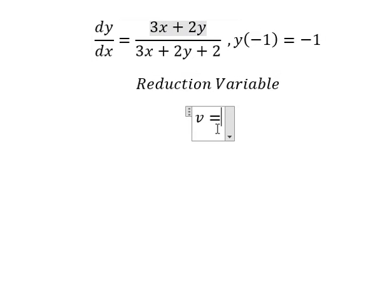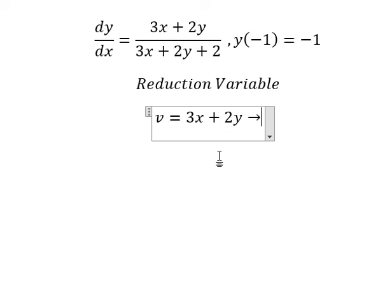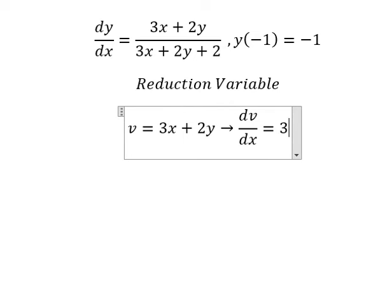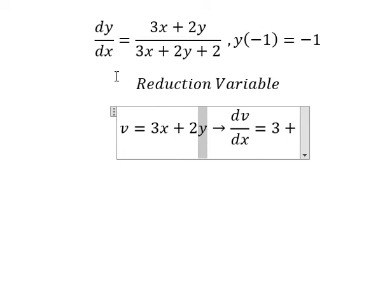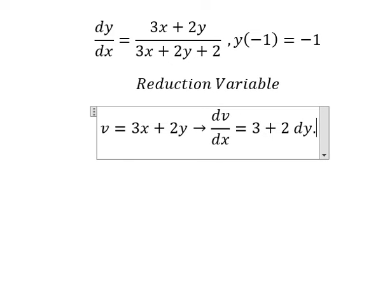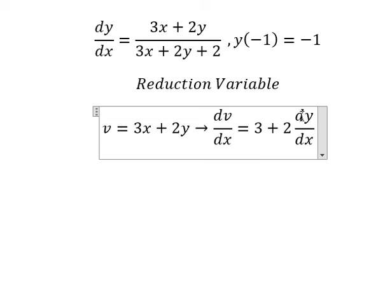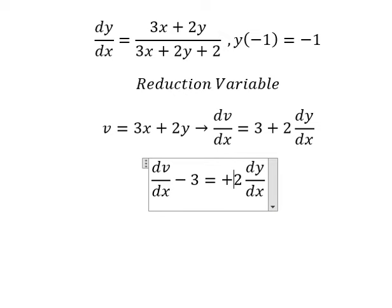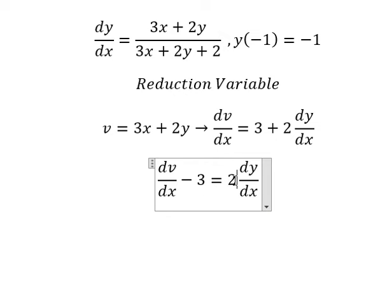We need to do the first derivative for both sides. You get DV over DX. The first derivative of X gives number one, and the first derivative of Y gives DY over DX. We don't have number three and number two, so we put number three in here and then divide both sides by number two.